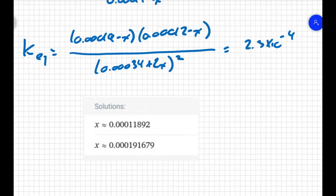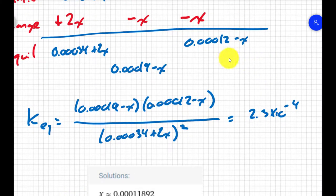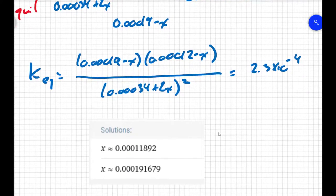We have two possible solutions for X, 0.00012 or 0.00019. If you look at your equations, 0.00019 doesn't make sense, because if you tried to plug that into this statement right here, you would get a negative number, and you can't have a negative concentration. So, I'm going to use 0.00012 as the correct answer, and not the 0.00019.